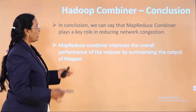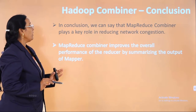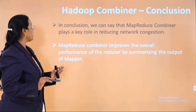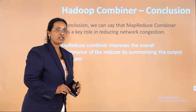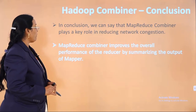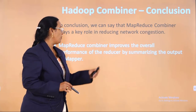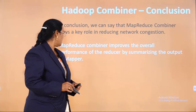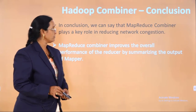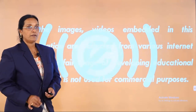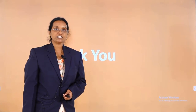In conclusion, the MapReduce combiner plays a key role in reducing network congestion and improves overall performance by summarizing the output of the mapper before it reaches the reducer. Thank you for listening. We will meet in the next session.